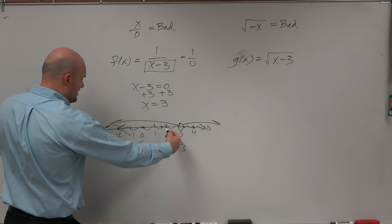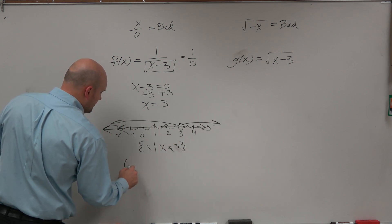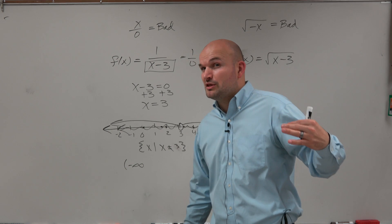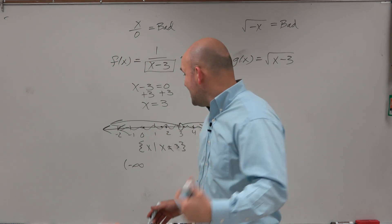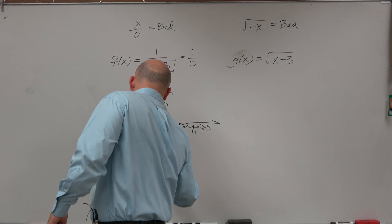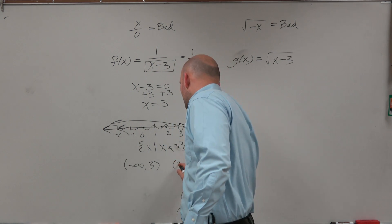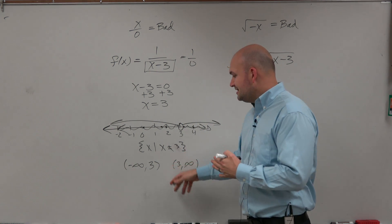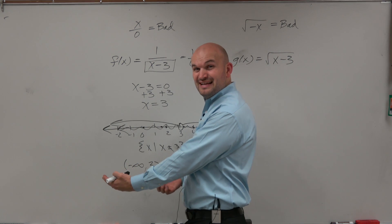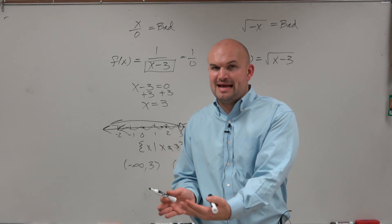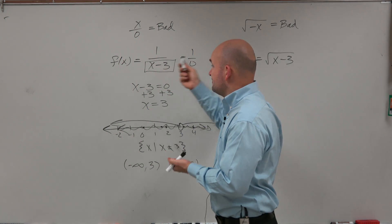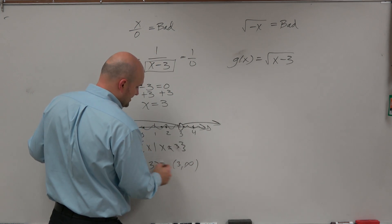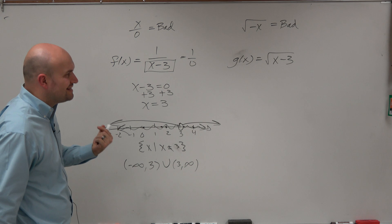Another way to look at this: continuing the number line, the lowest we can go is negative infinity, and we can go all the way up to 3 — getting very close, like 2.9999999999 — but not actually reaching 3. Then on the other side of 3, we go from 3 to positive infinity. We use parentheses because infinity is not a number and 3 is not contained in the domain. So in interval notation: negative infinity to 3, union, 3 to positive infinity.